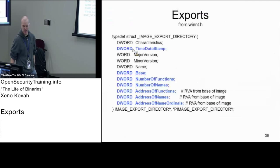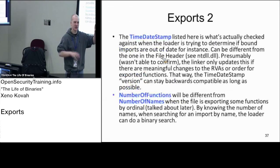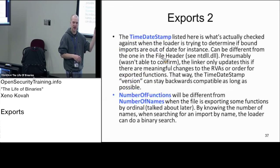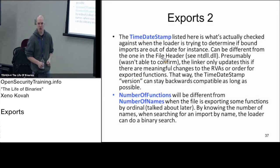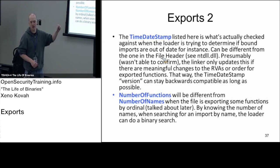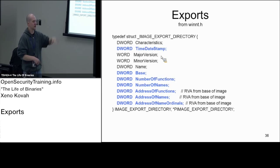Starting from the single structure that points at three lists — here's some stuff we care about. First of all, time date stamp. Before, when we saw bound imports, we said there's a time date stamp that specifies which binary this corresponds to. In reality it's the time date stamp in the export information. So when you're doing binding and pre-filling in the import address table, you take the time date stamp from this exports data structure and fill it into the bound import information, saying this is the version of this particular DLL which was used when the import address table was filled in.